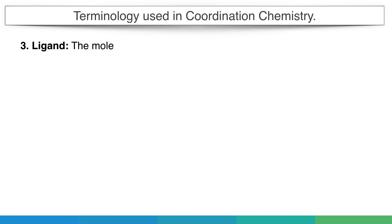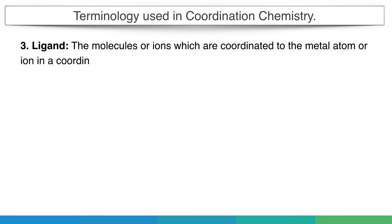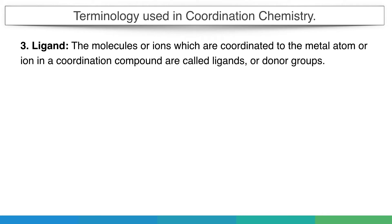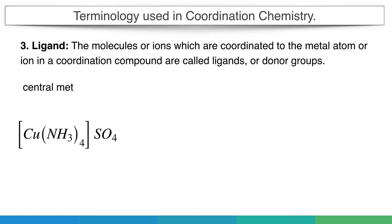Next comes ligand. Ligands are the molecules or ions which are coordinated to the metal atom or ion in a coordination compound. For example, in a complex where copper is the central metal atom, the 4 ammonia groups attached to the central metal atom by coordination bonds are called ligands. Ligands can be negative, positive, or neutral. The only requirement is that they should have an extra pair of electrons.